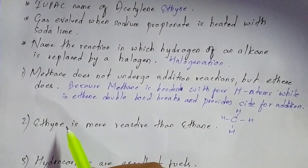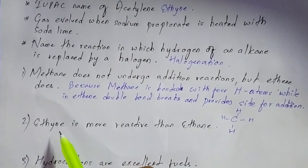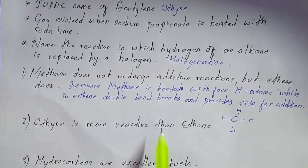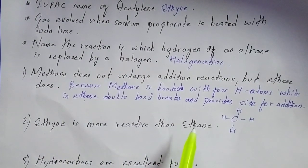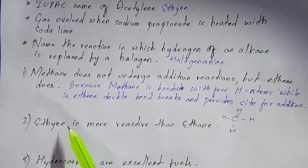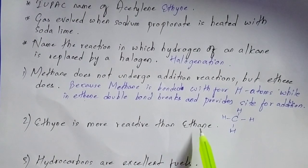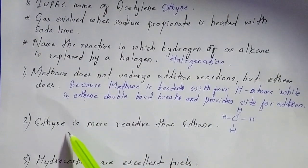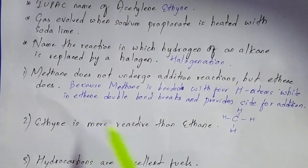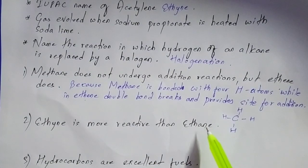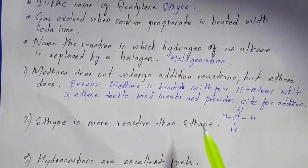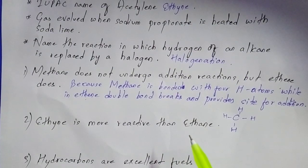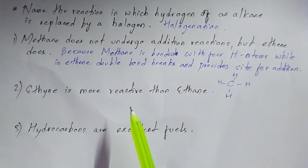The next 'give reason' question: ethyne is more reactive than ethane. The reason is that ethyne has a triple bond whereas ethane has a single bond. Ethyne is more reactive because of its triple bond, whereas ethane is less reactive because it has a single bond. The answer will also be available in the PDF.